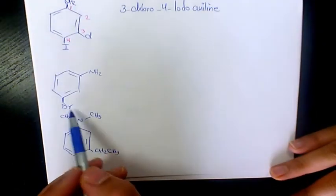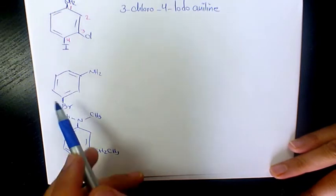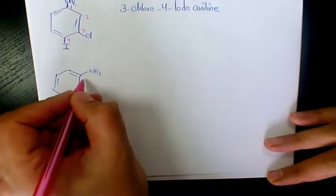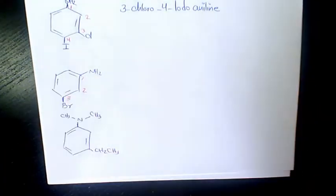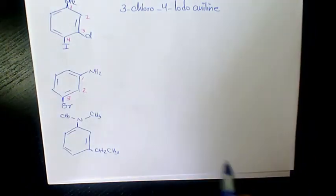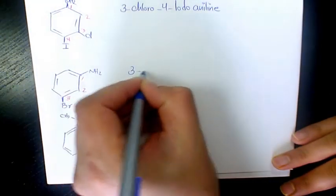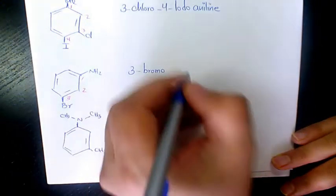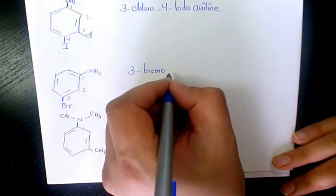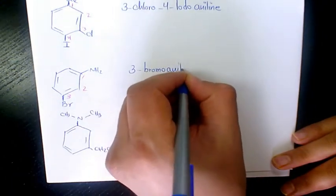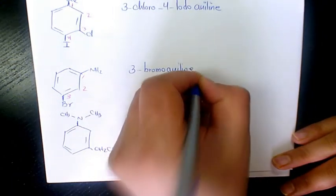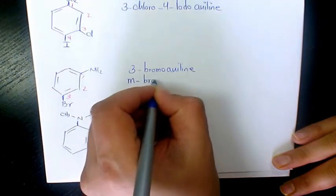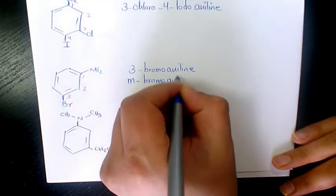Next one, we have bromo, and bromo is on the third carbon as you can see here. So it's going to be 3-bromoaniline, or you can also say meta-bromoaniline.